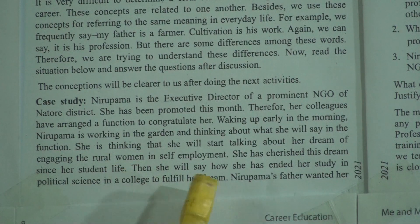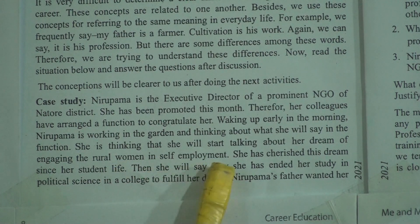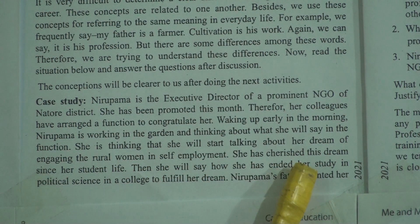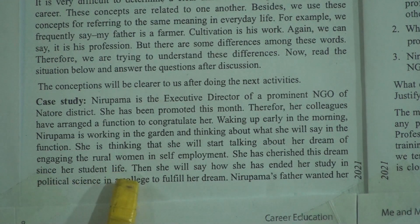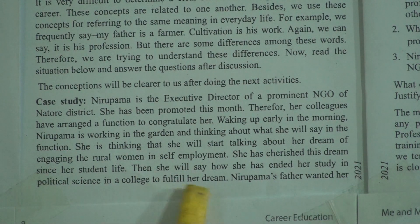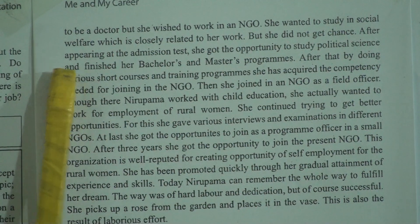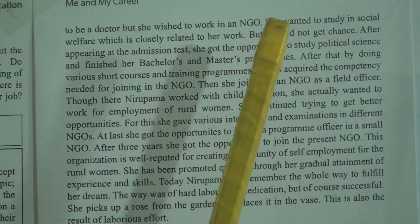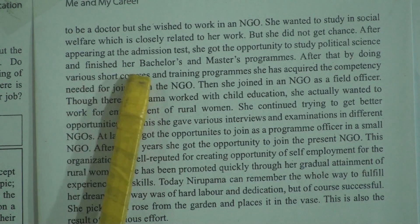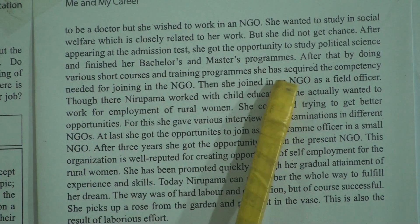Waking up early in the morning, Neu Poma is working in the garden and thinking about what she will say in the function. She is thinking that she will start talking about her dream of engaging the rural women in self-employment. She has cherished this dream since her student life. Then she will say how she ended her study in political science in a college to fulfill her dream. Neu Poma's father wanted her to be a doctor but she wished to work in an NGO and study in social welfare.